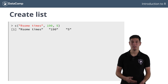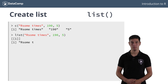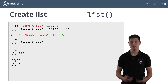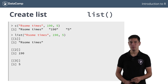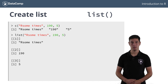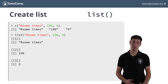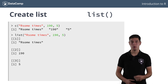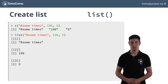Trying to store this information in a vector using the c() function inevitably leads to coercion. However, you can also store this information in a list using the list() function. This time, all the elements have kept their original type. The printout is also pretty different from what you're used to. We'll store the list in a new variable called song.